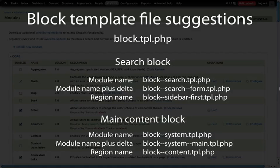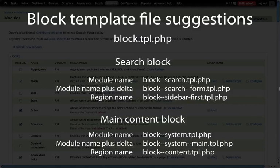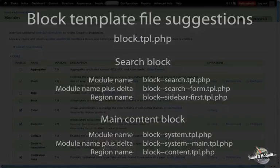In the next step, we'll look at how to find this information, because sometimes it's not clear what module a block belongs to, what region it's in, or what delta a particular block has. We'll look at how to use Firebug to inspect the block and region elements in order to find the information we need to specify in our template file name.